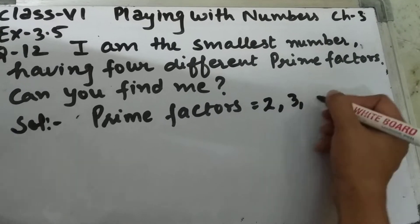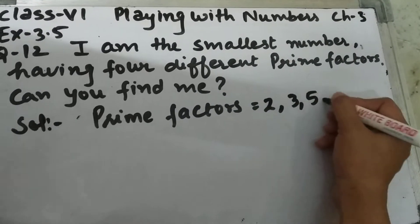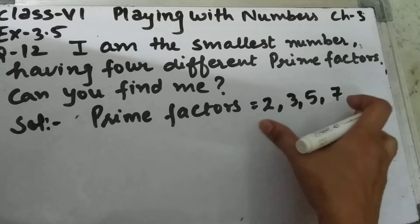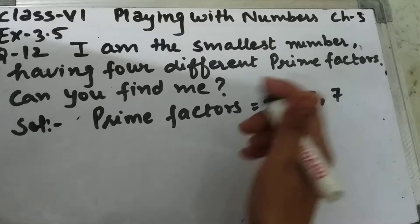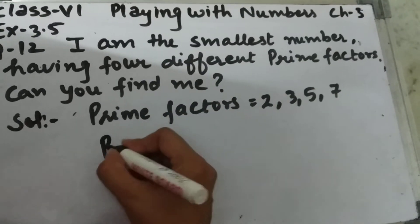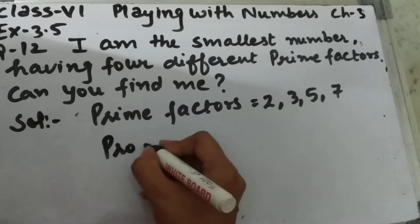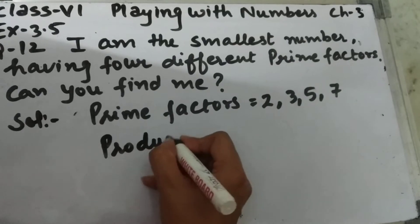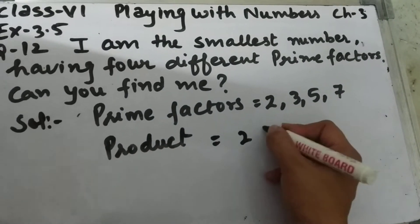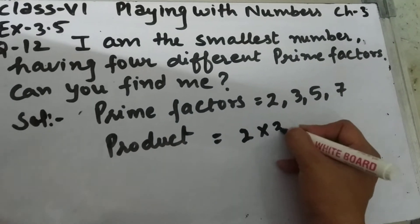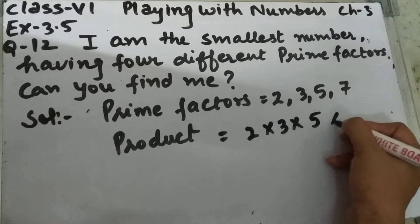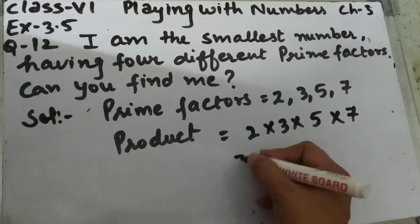The 4 smallest prime numbers are 2, 3, 5, and 7. These are the smallest prime numbers. After that, we will find the product. The product of these numbers is 2 multiplied by 3 multiplied by 5 multiplied by 7.